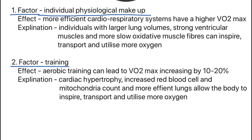The second factor is training. Aerobic training can lead to a VO2 max increase of around 10-20%. This is because you're going to obtain cardiac hypertrophy, increase your red blood cell counts and mitochondria counts, and have more efficient lungs, which allows you to inspire, transport and utilise more oxygen.